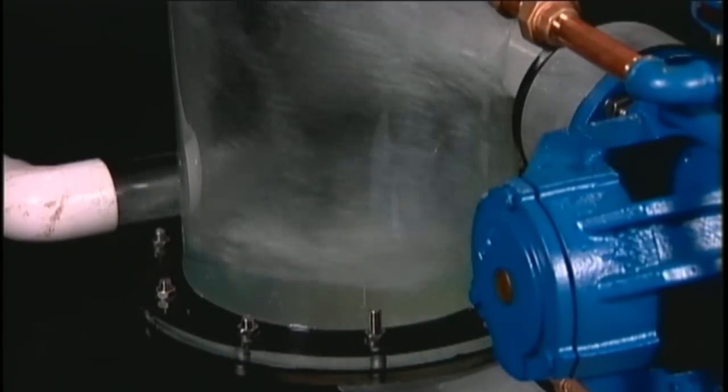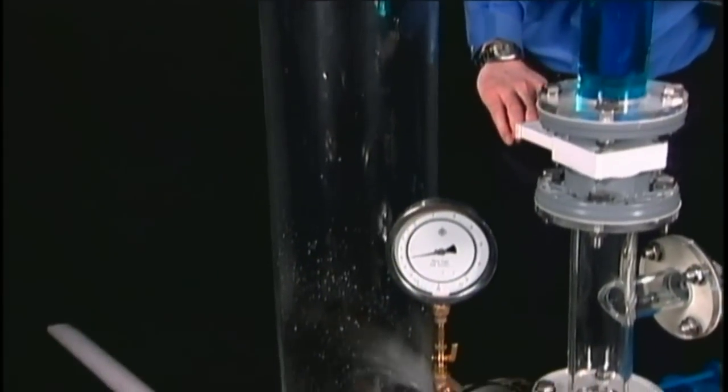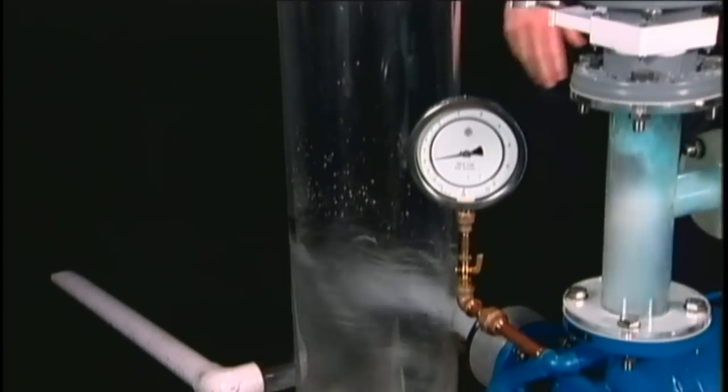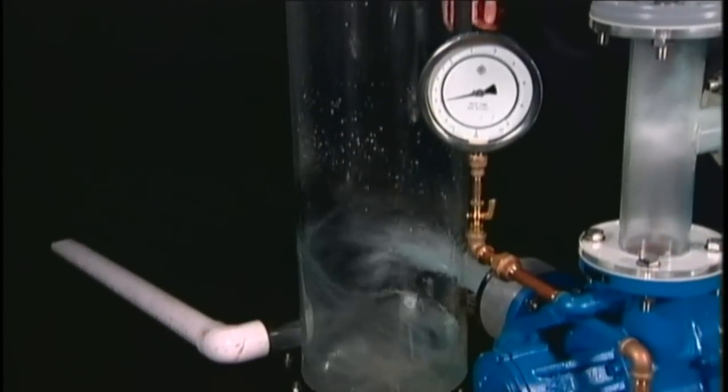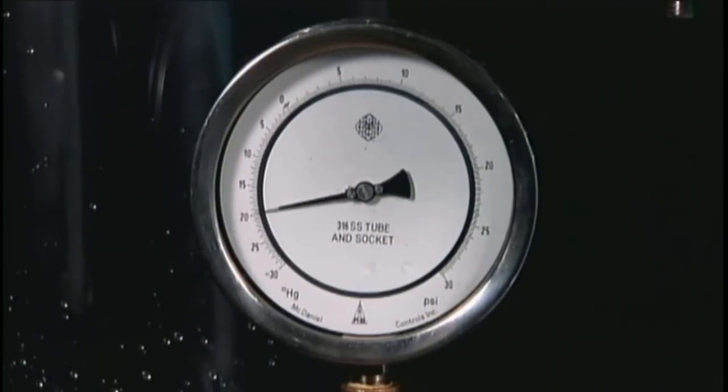That could have destroyed some pumps, but liquid is a natural element in a Nash pump. The slug passed right through and the vacuum was barely affected and just for a split second.